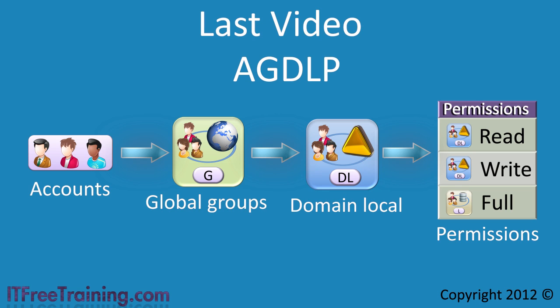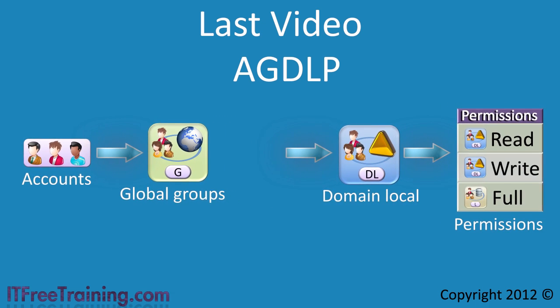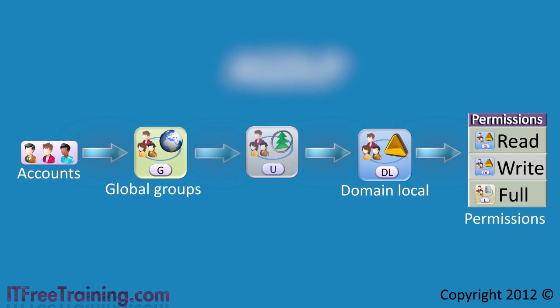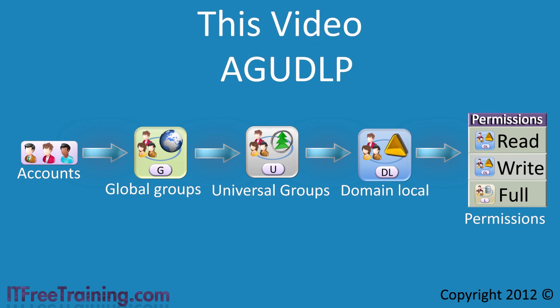In a large enterprise with multiple domains, you will want to look at a different group strategy like AGUDLP, as it scales better and provides more functionality and flexibility than AGDLP. AGUDLP adds universal groups between global groups and domain local groups. Accounts go into global groups like before, but now these global groups go into universal groups, which go into domain local groups, which are then applied to resources as permissions.